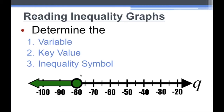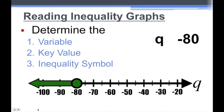Our final example. The variable is q, and the circle is at negative 80, so the key value is negative 80. Can the possible solution be negative 80? Yes — the circle is filled, so it can also be equal to negative 80. We're going from negative 80 to the left, so it is less than negative 80 as well, because we're shading to the left. The inequality symbol we use is less than or equal to: q is less than or equal to negative 80.